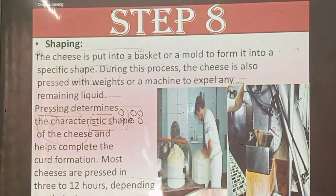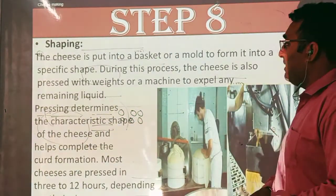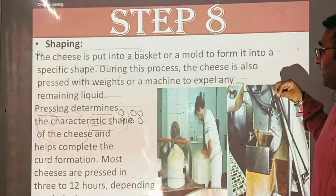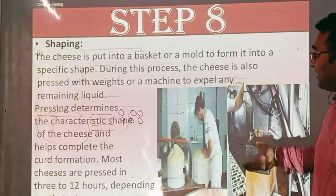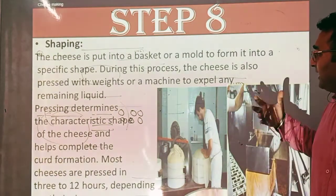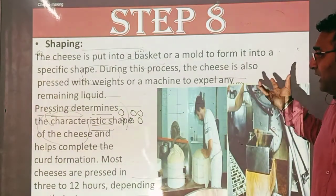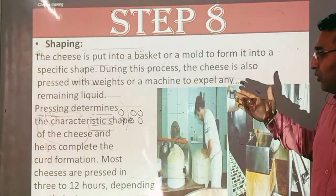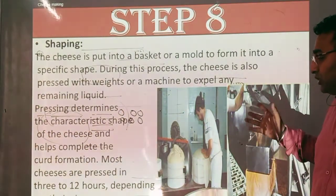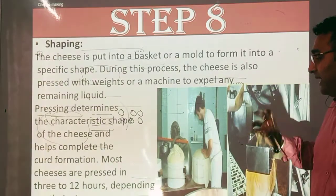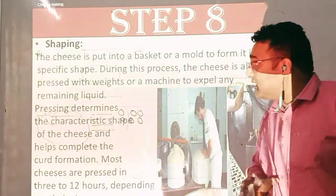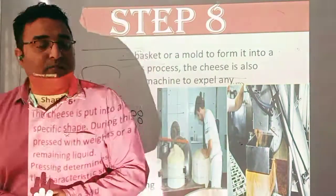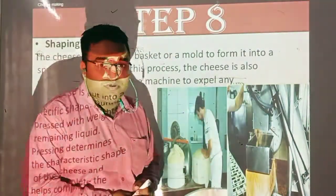The last step is shaping the cheese. It can be placed into different molds in specific shapes, and then the liquid part is expelled by machine. The cheese will finally come to its final stage. This is how the rennet enzyme helps in the processing of cheese.